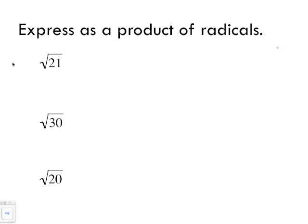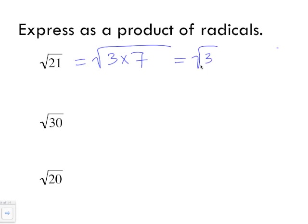Expressing as a product of radicals just means finding numbers that multiply to give you the number inside. We always want the smallest possible numbers that cannot be square rooted. For the square root of 21: what numbers multiply to 21? Three times seven. So another way of writing this as a product of radicals is radical three multiplied by radical seven, exactly as shown earlier in this lesson.